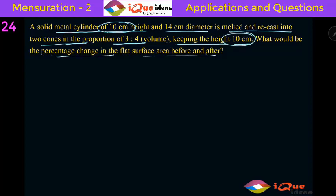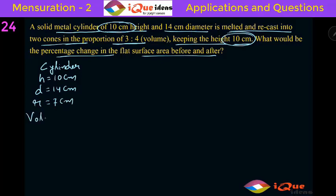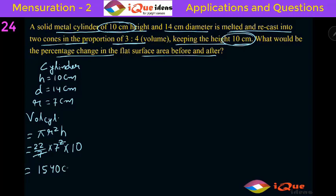What would be the percentage change in the flat surface area? First, let's calculate the volume of the original cylinder. The height is 10 centimeter and the diameter is 14 centimeter, so the radius is half of 14, that is 7 centimeter. The volume of a cylinder is Pi R square H. Pi is 22 by 7, R is 7, H is 10. One 7 cancels, giving 22 into 7 into 10 — that is 1540 centimeter cube.